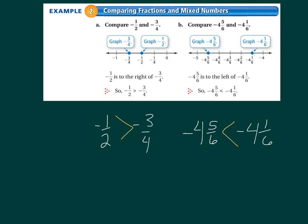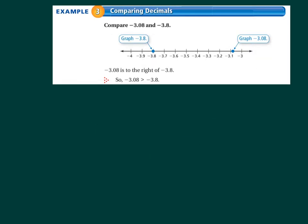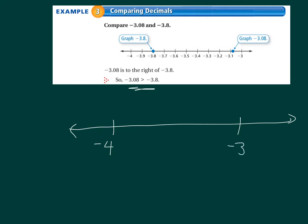For comparing numbers on a number line, put the two integers each number is closest to. Negative three point eight is closest to negative four, and negative three point zero eight is closest to negative three. In the picture, negative three point zero eight is barely past negative three point one, while negative three point eight is almost at negative four. Negative three point zero eight is greater because it's closer to zero.